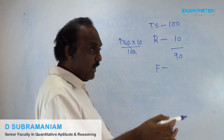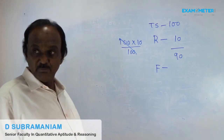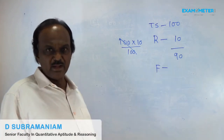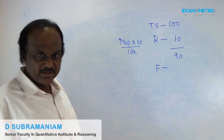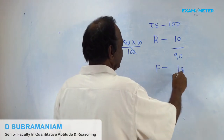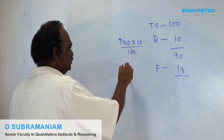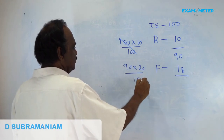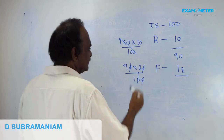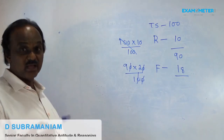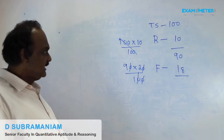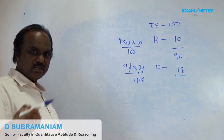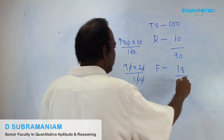20% of the balance on food. 20% of 90: 10% means cut one zero — 90 becomes 9. Double of 10% is 20%, double of 9 is 18. So 18 rupees spent on food. The balance is now 72.